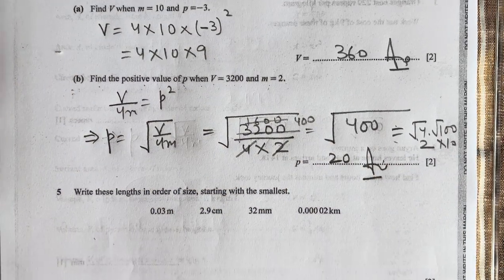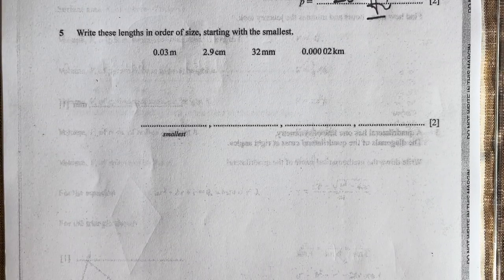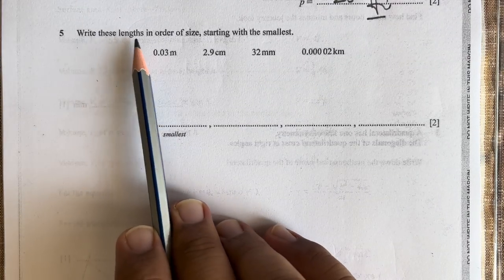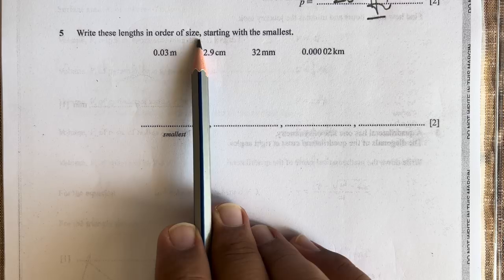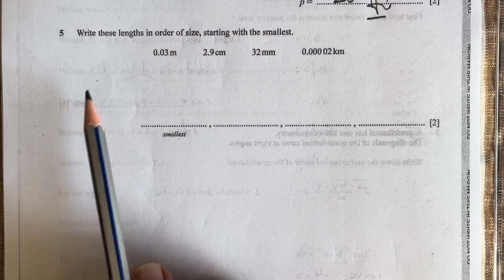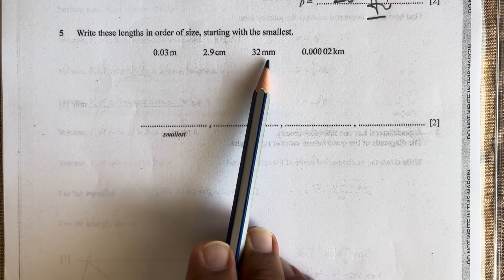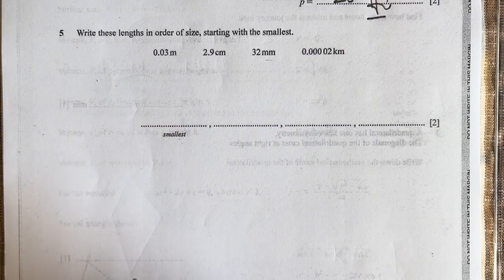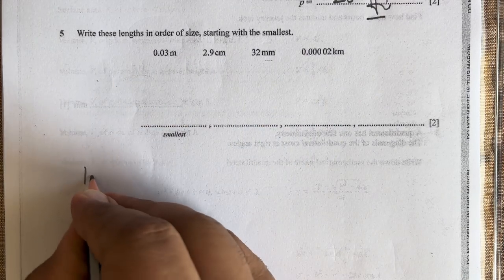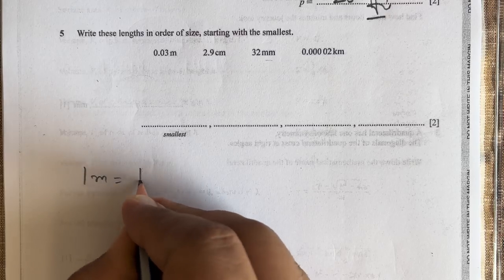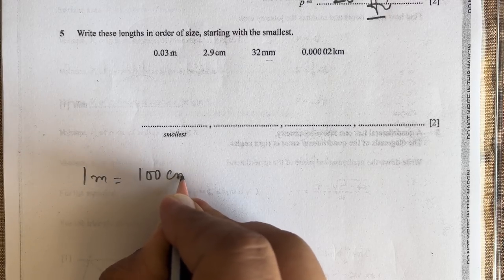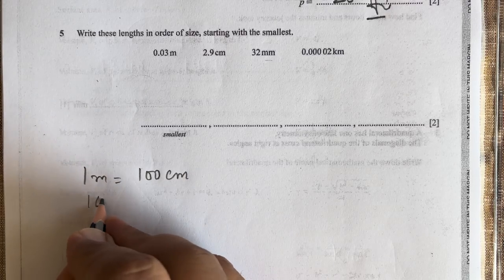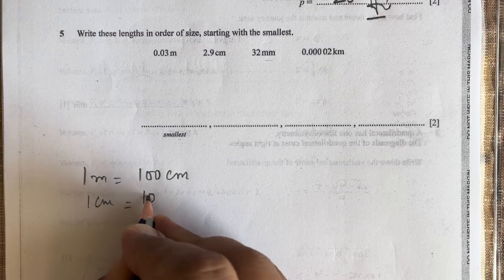Question number 5: Write these lengths in order of size, starting with the smallest. We have the smallest unit here as millimeters, so we will convert all of these to mm. We know that 1 meter = 100 centimeters, 1 centimeter = 10 mm.